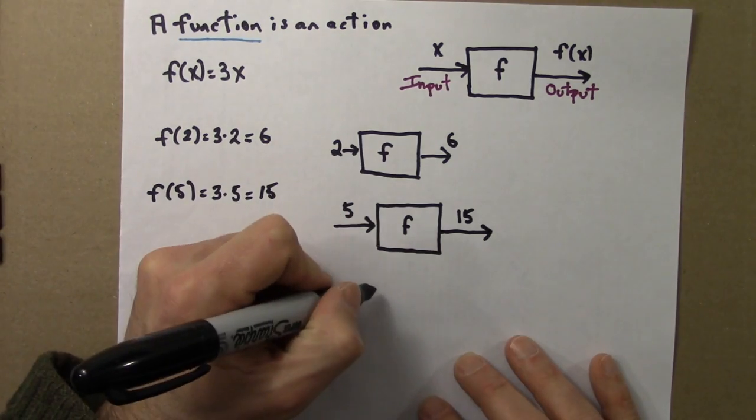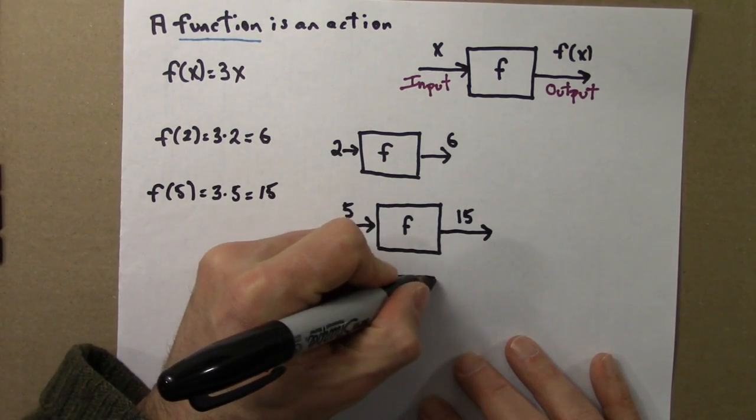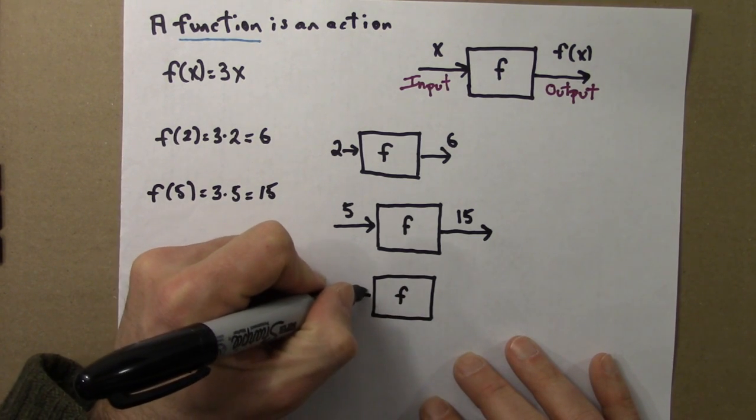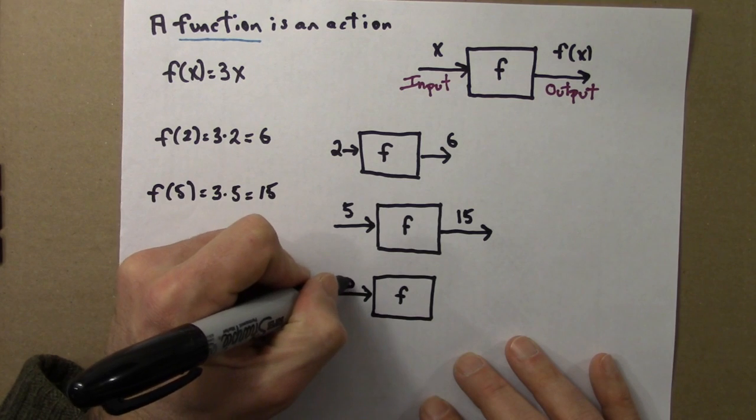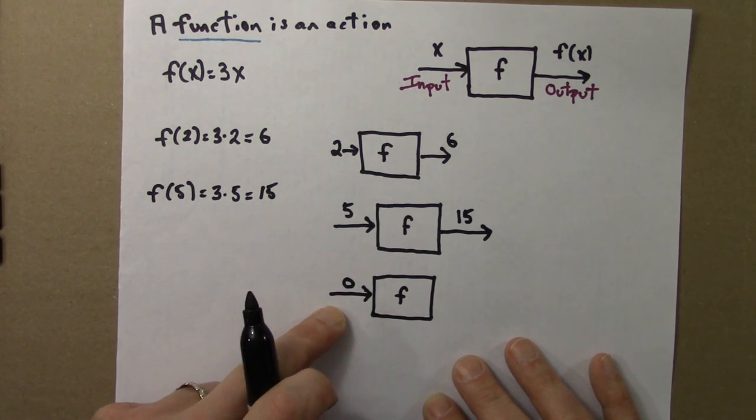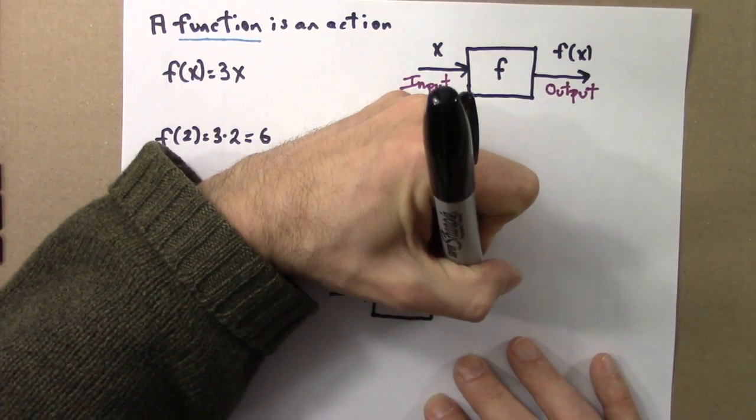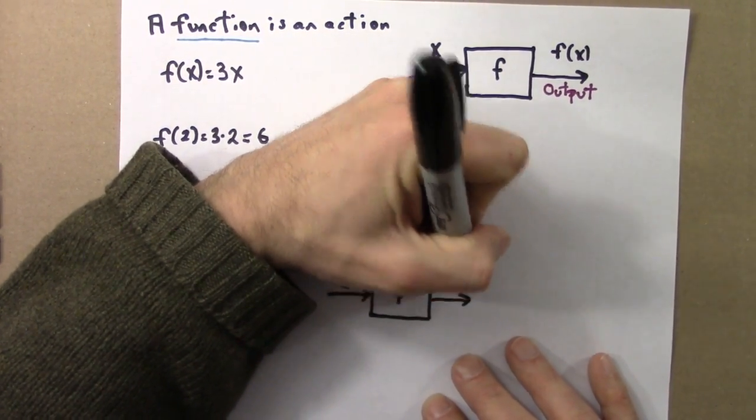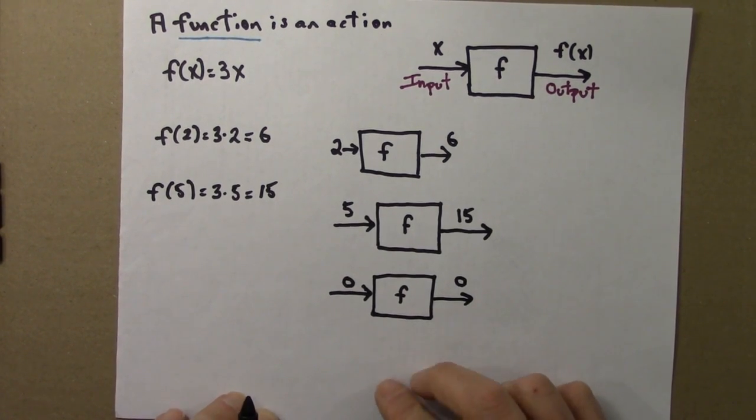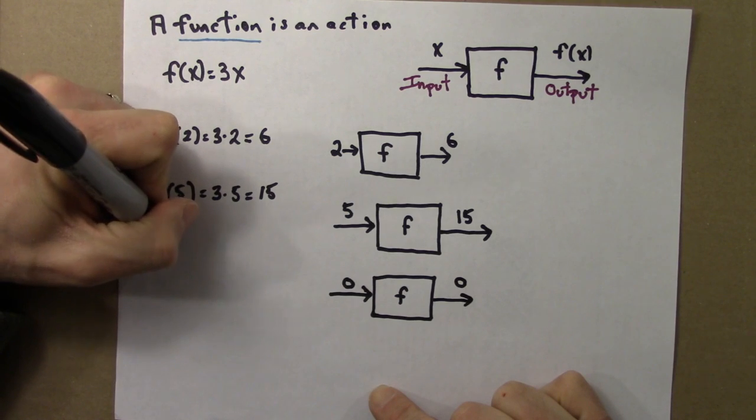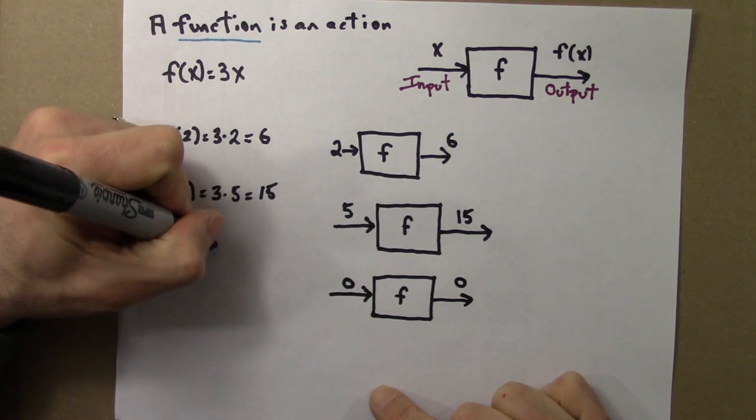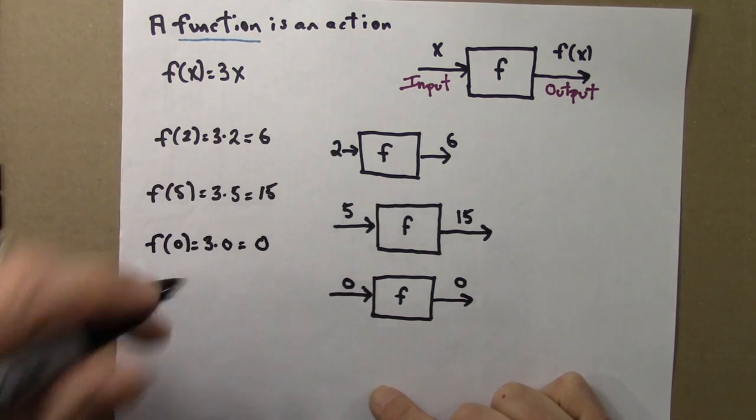Let's do one more quick example. Same function f. Suppose the input now is 0. So nothing. 0 times 3 is still 0. So in this case, it outputs the same number that it inputs. If you have nothing and you triple it, you still have nothing. Using this notation, f of 0 is 3 times 0. 3 times 0 is 0.